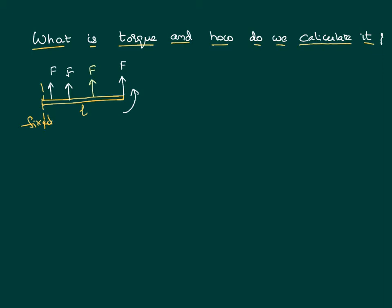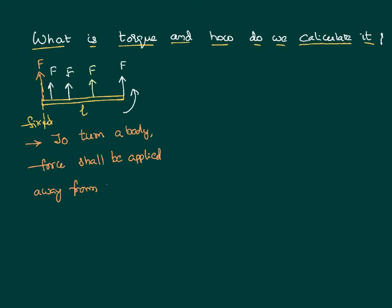If you apply the force at the axis of rotation itself, the body will never turn, no matter how much force you apply. So the basic rule is: to turn a body, the force must be applied away from the axis of rotation. This motivates us to study the impact of force depending on where it is applied.